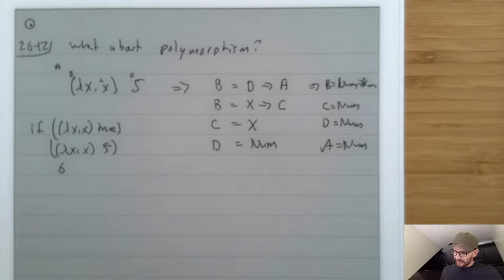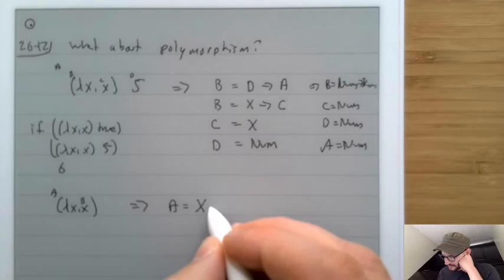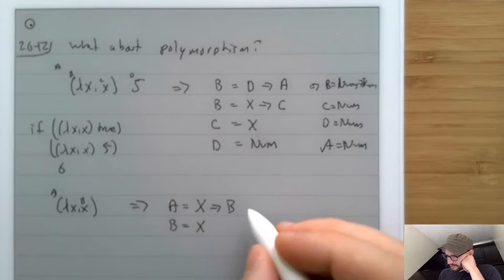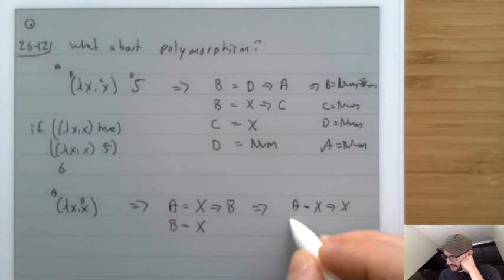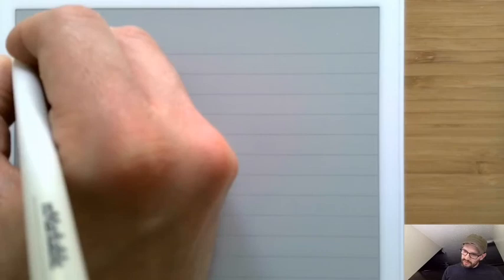If we run inference on the unapplied lambda x. x alone, we get that a is a function from x to b, and b equals x, so a is x arrow x. Since x is never constrained to any particular base type, it remains a free variable — that's what polymorphism is. However, there's a tricky situation: if we write let id = lambda x. x in (id true) (id 5) 6, the system will say id must be bool arrow bool from one use and number arrow number from another, producing a type error.